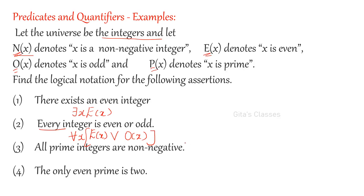Next: all prime integers are non-negative. For all x, if you pick a prime integer it has to be non-negative. Here we cannot use OR or AND, because if you select a prime integer it has to be non-negative — that is a conditional statement. So: for all x, if P(x) then N(x). That is, for every x in the integers, if it is prime then it has to be non-negative.